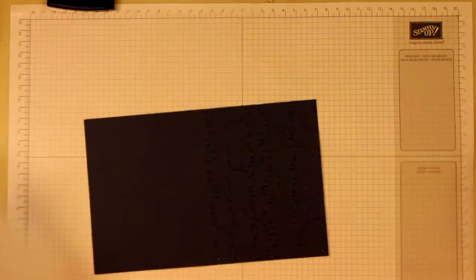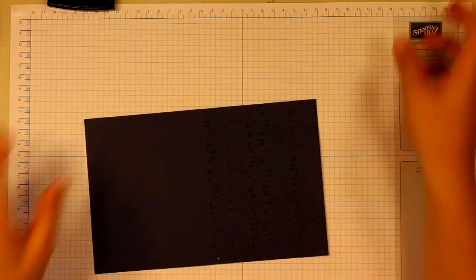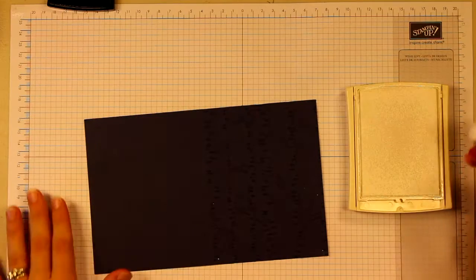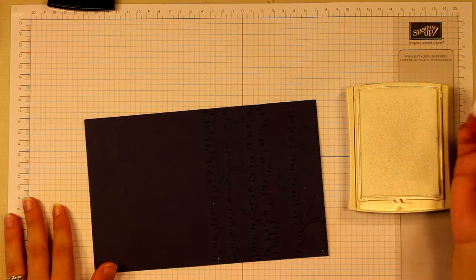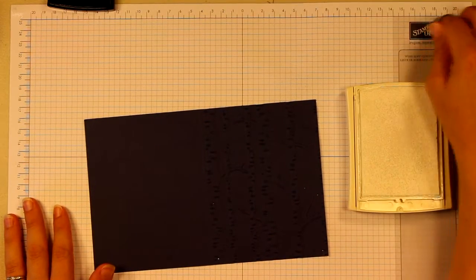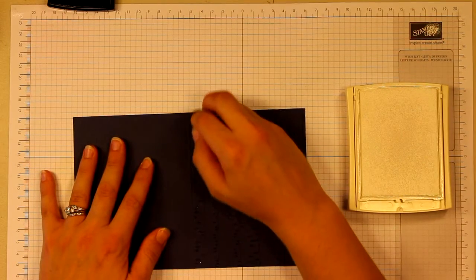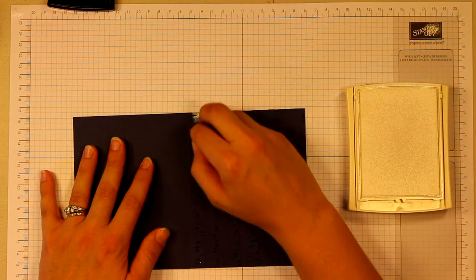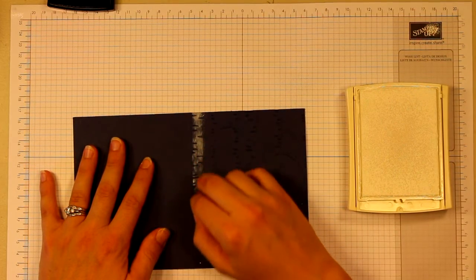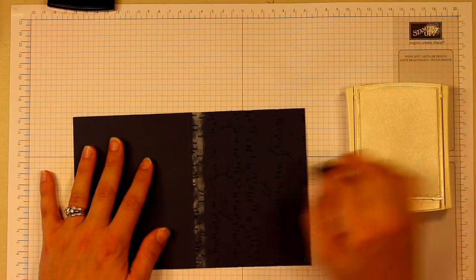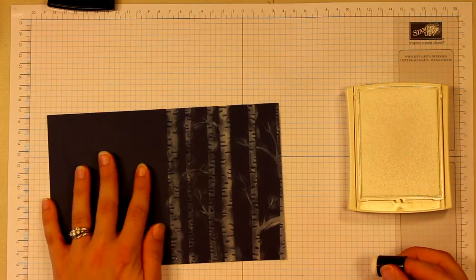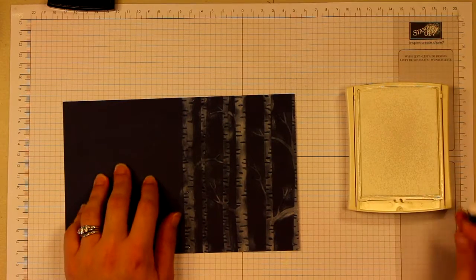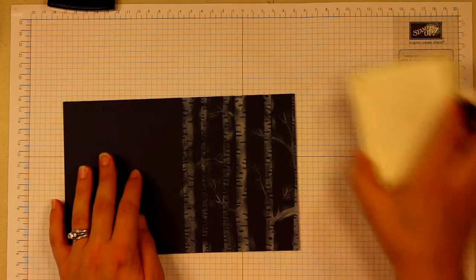I already embossed it. Next I am going to use some Whisper White craft ink and a sponge dauber and I am just going to run over these trees with that. So there is that much.